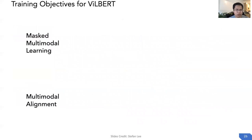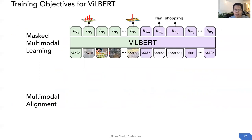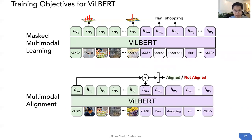We have two training objectives: masked multi-modal learning and multi-modal alignment. In masked multi-modal learning, we randomly mask image patches and tokens, and the target is to reconstruct the masked input using the surrounding context, following the BERT objective. In multi-modal alignment, we randomly sample image and caption pairs and predict whether the image and caption correspond to each other.